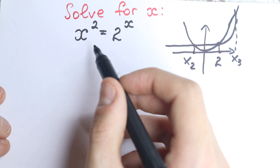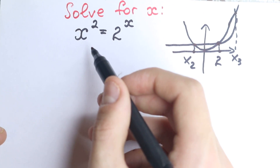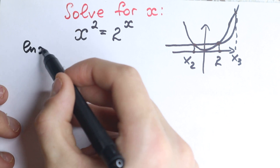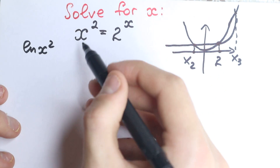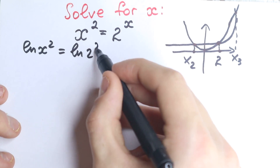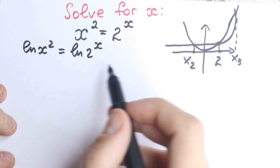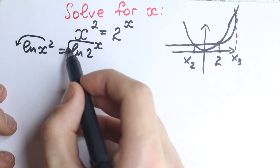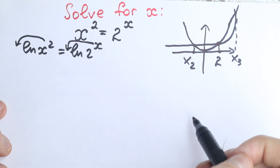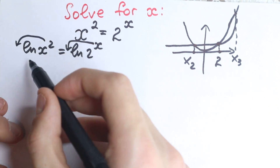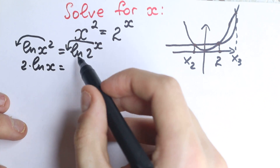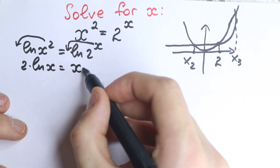First of all, we need to take the natural log on both sides, because we have these powers and these variables, and we need to bring them down. So we have the natural log of x squared on the left, and applying the log power rule — our 2 goes down and our x goes down — we get 2 times natural log x equals x times natural log 2.